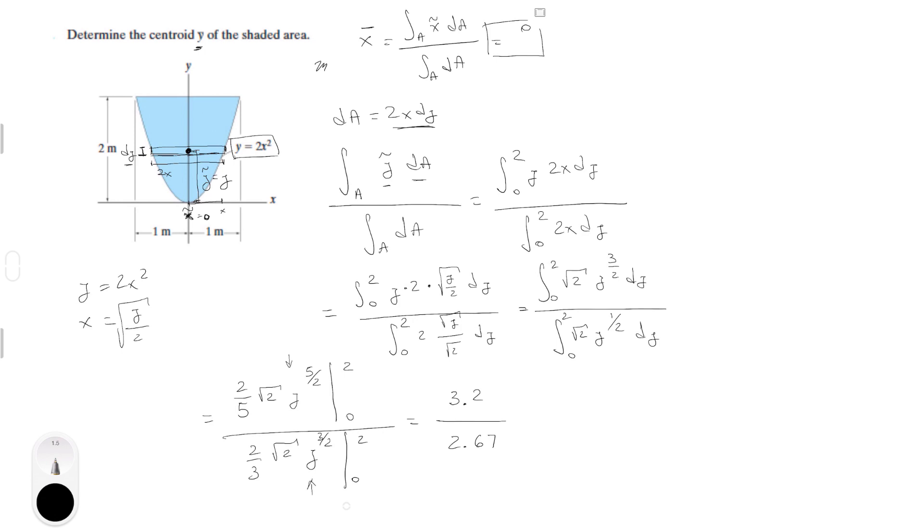And you're gonna get that the centroid is equal to ȳ times 1.2. And the centroid, like I said, is at 0 comma 1.2, which is somewhere over there.